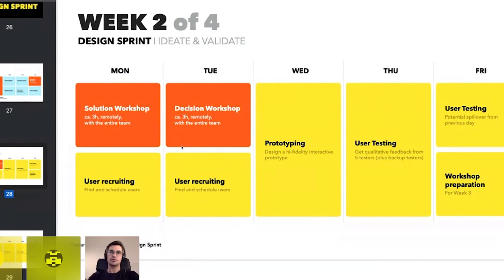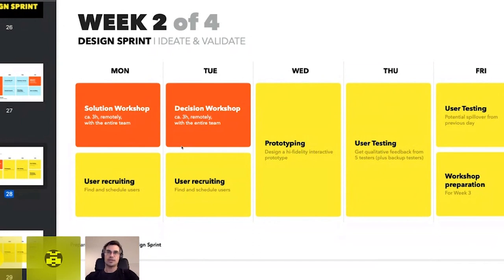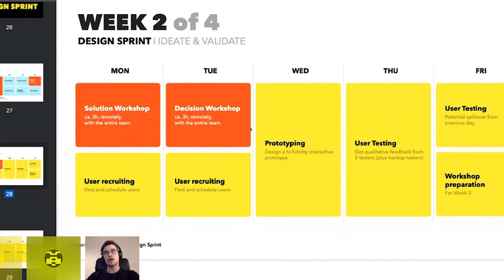We do this to force people to do it quickly without worrying too much about details. We don't do the solution workshop on Friday, because we want to avoid people spending their entire weekend sketching the perfect solution only for it not to get chosen. We do it on Monday, give them a time box, and when time is up they send a photo of their concept to the facilitator, who uploads it to the board. Tuesday is when decisions are made — art gallery, heat map exercise, straw poll, decider vote, user test flow, and storyboarding.